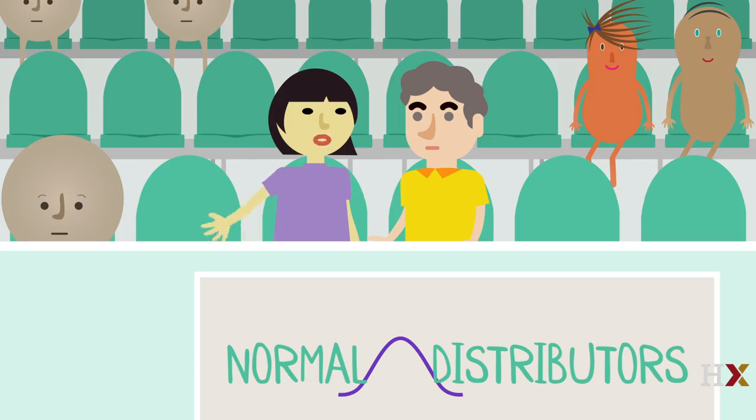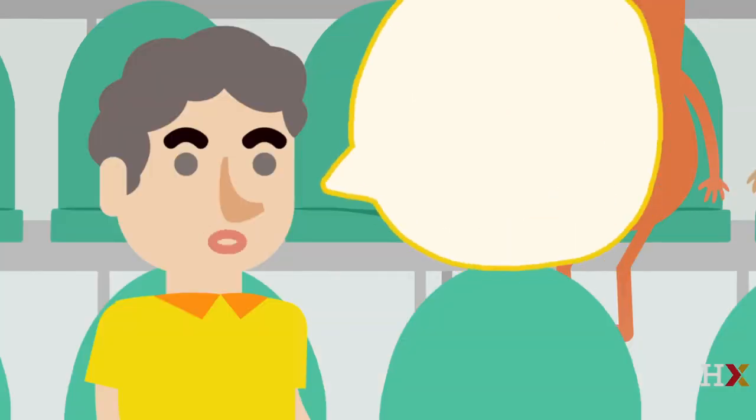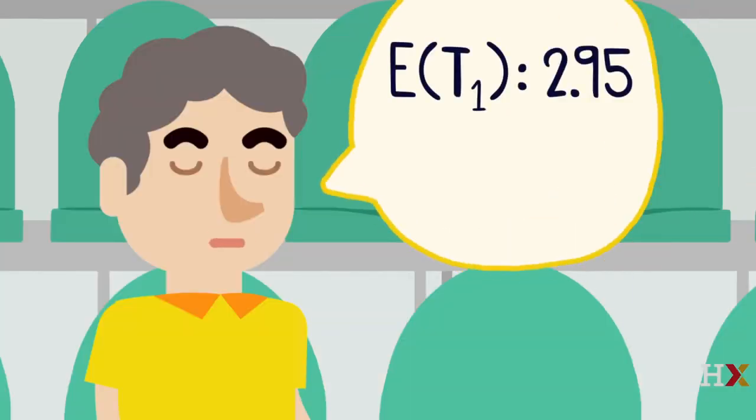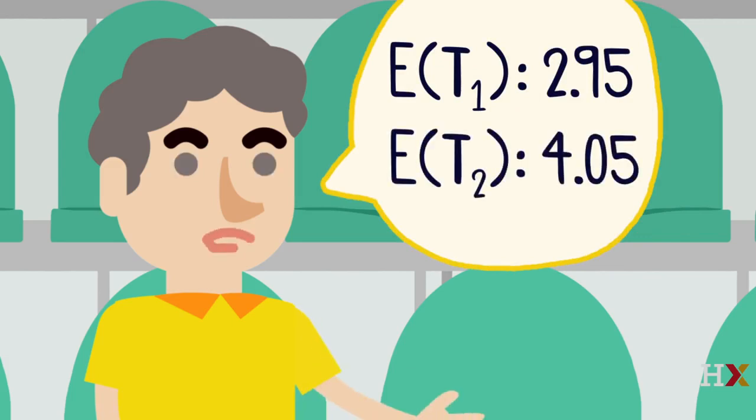Colin, so how did Lyra Loopski do compared to what we expected based on her past performances? Oh, I have a lot of data on that. In the past, her average T1 time was 2.95 seconds, and her average T2 time was 4.05 seconds.